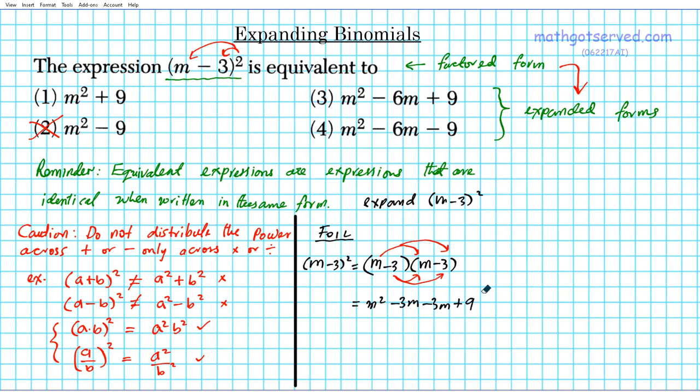The middle terms are like terms, identical degrees, like variables. So that's going to be m squared minus six m plus nine. The answer is option number three. So that's it.